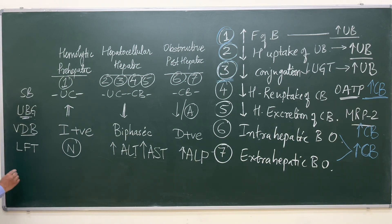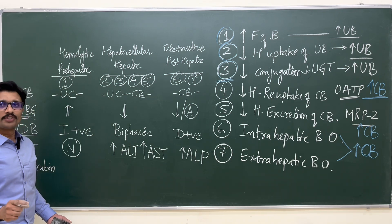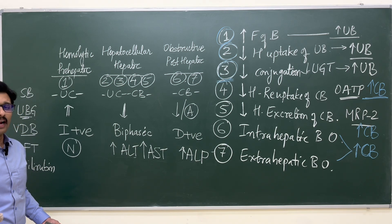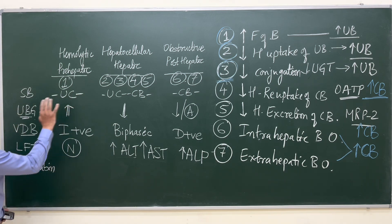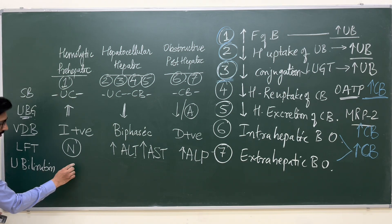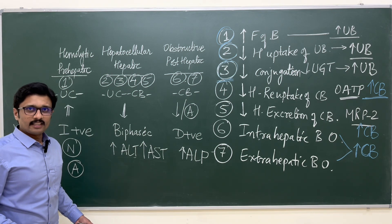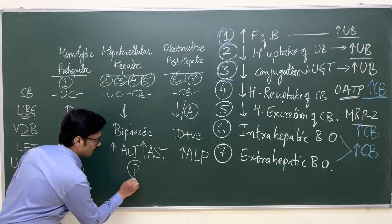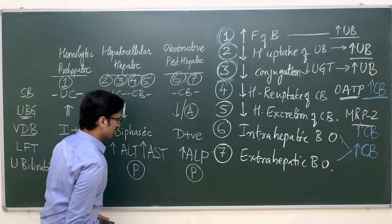Now, what happens to urine bilirubin levels? If bilirubin is unconjugated, it is always bound to plasma protein and is not filtered through the glomerular membrane, so it is not present in the urine. In case of unconjugated hyperbilirubinemia, urine bilirubin is absent. If urine bilirubin is present, it is definitely the water-soluble conjugated bilirubin — and this is the case in hepatocellular jaundice and also in obstructive jaundice, where urine bilirubin will be present.